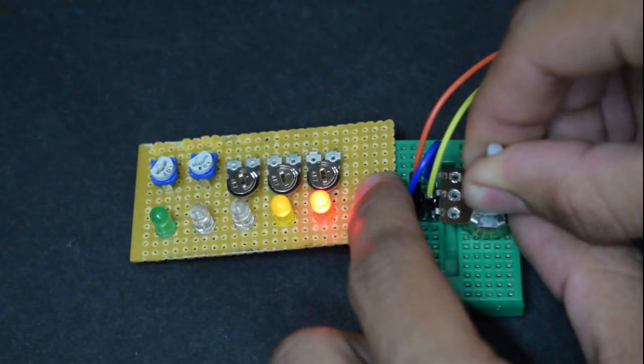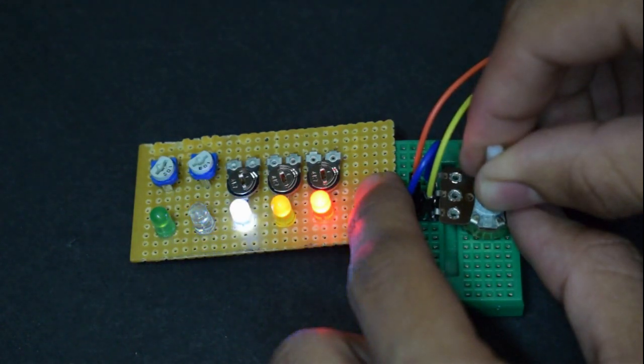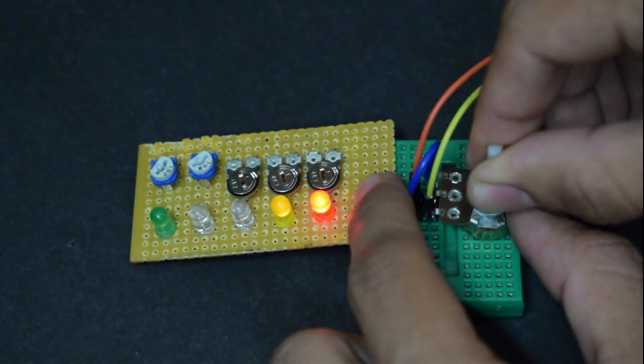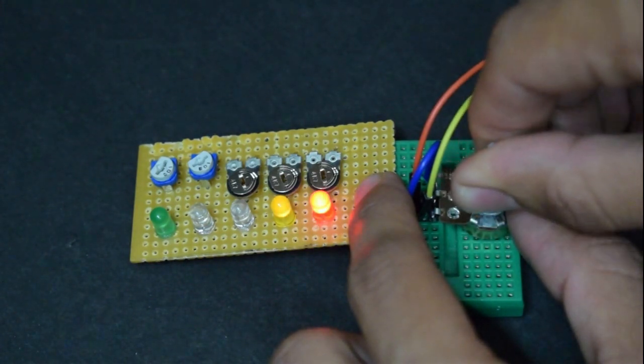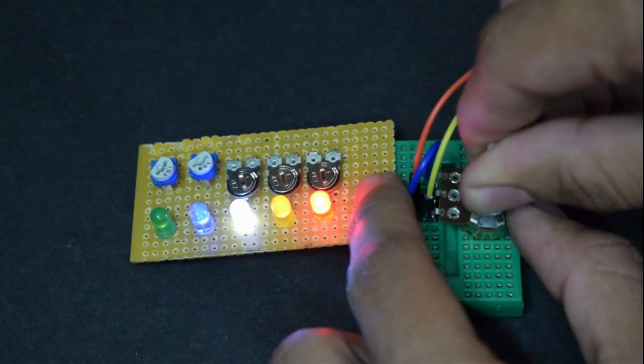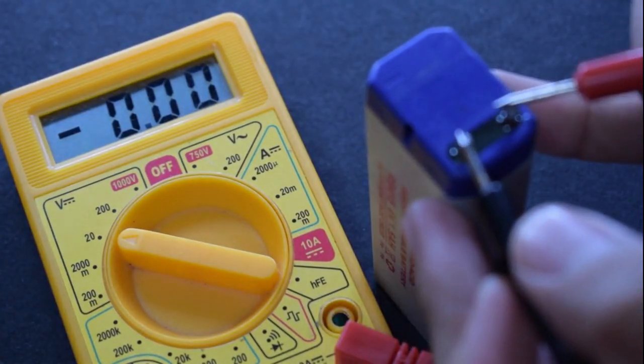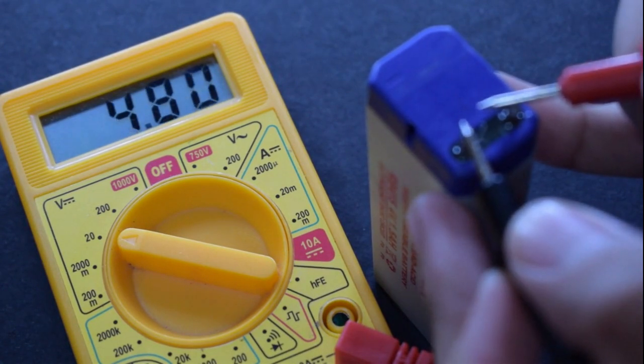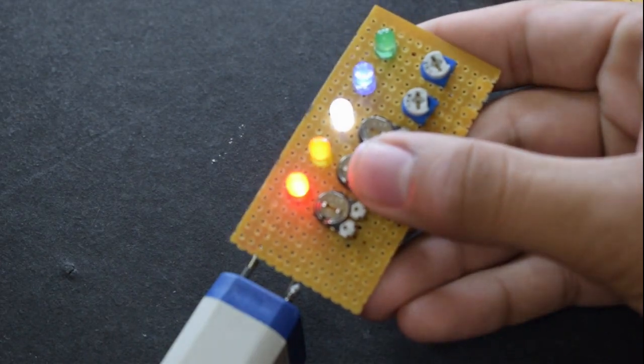Here I have used a potentiometer to vary the voltage to see how the LEDs change their states. Now see, the battery is fully charged. The same is indicated by the LEDs.